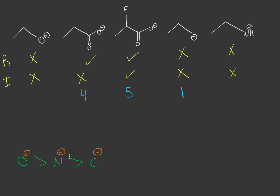Right after that comes nitrogen. Nitrogen doesn't want that negative charge — it's more electronegative than carbon, but definitely not enough to the point where it's more than oxygen. So this would be the second most basic, and that makes the methoxide or ethoxide ion the third most basic. So that's how you rank by basicity — it's essentially the opposite of ranking acidity.